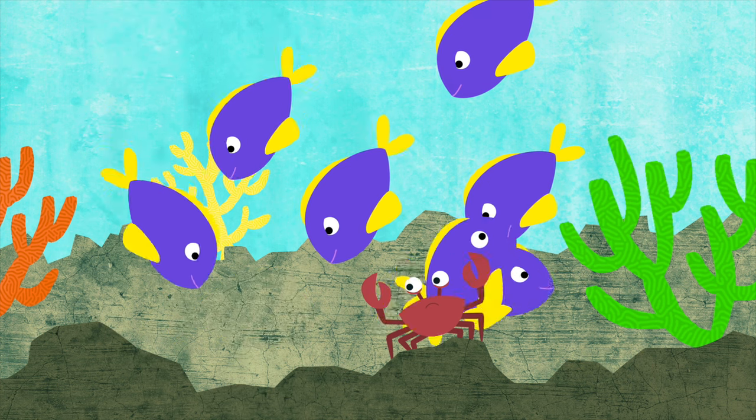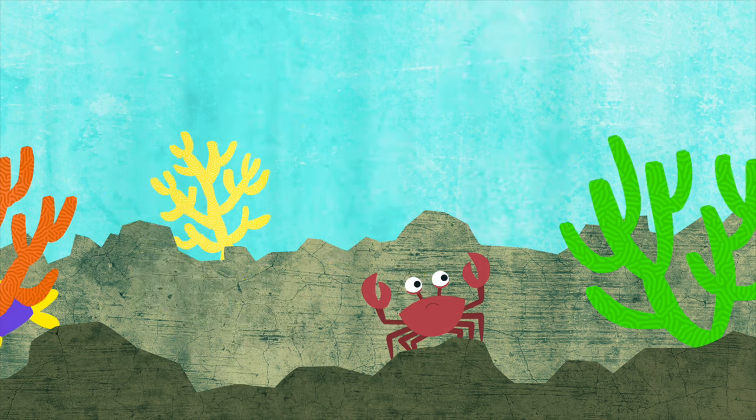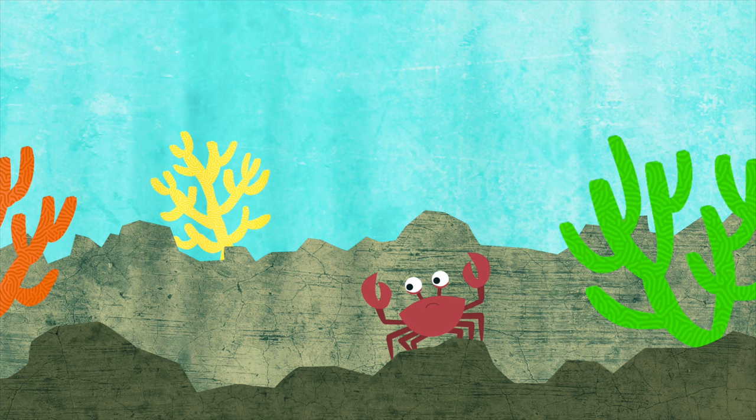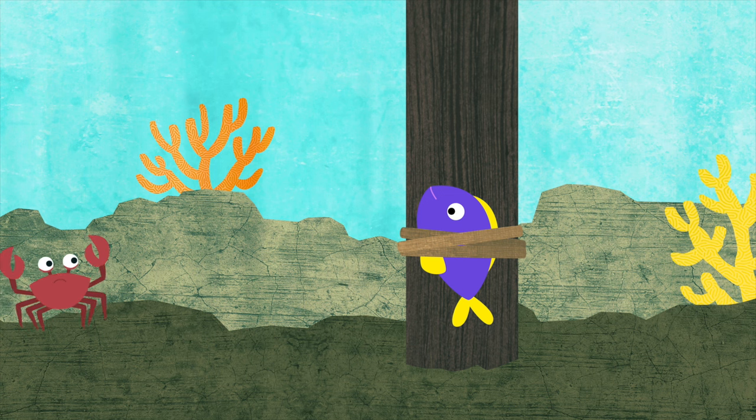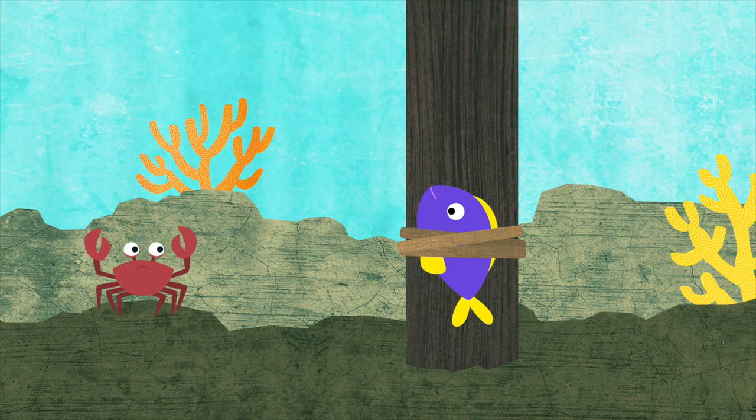The fish were very angry. They took Finley and they tied her up to the pier. Finley didn't know why the other fish were so angry. And she didn't want to be tied up either. But Finley felt good inside. Finley knew in her heart that she did the right thing.